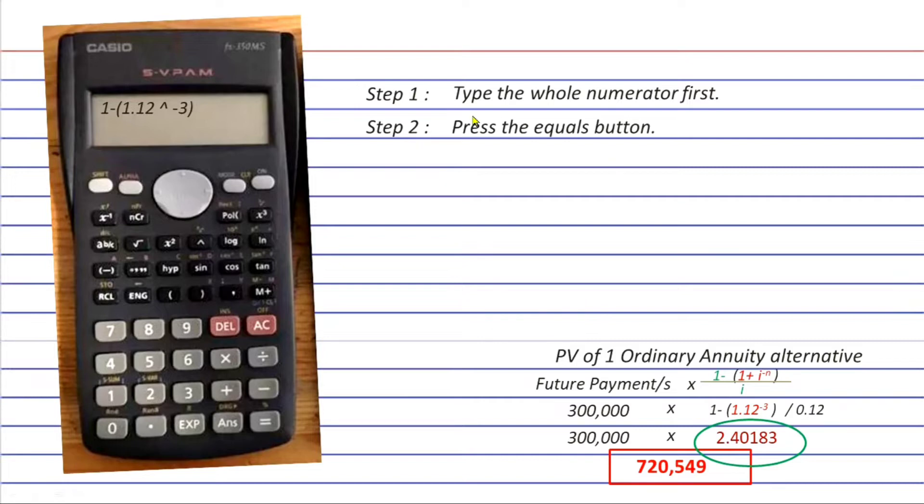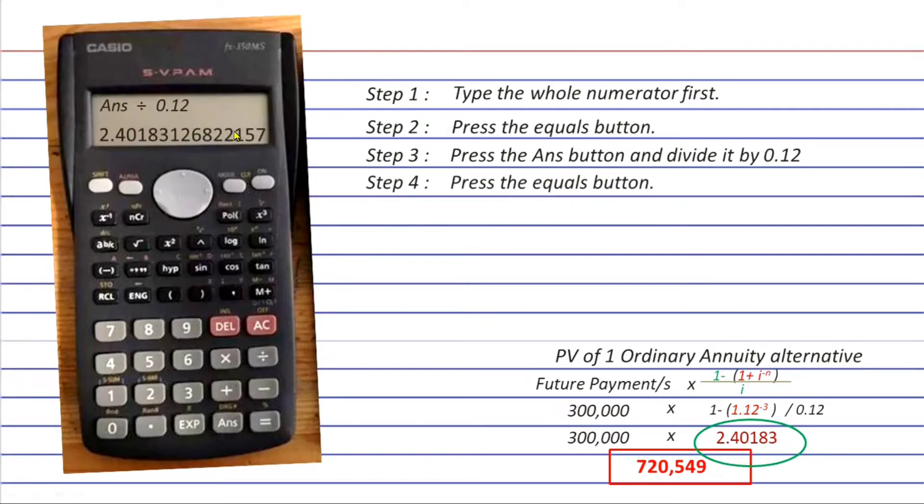Step 3, press the ANS or answer button, which is this one, and divide it by 0.12. Press again the equals button and you will get this, which is already the factor that we are looking for, although this here has not been rounded off to the nearest five decimal places. That's how you get the present value of one ordinary annuity factor using the scientific calculators.